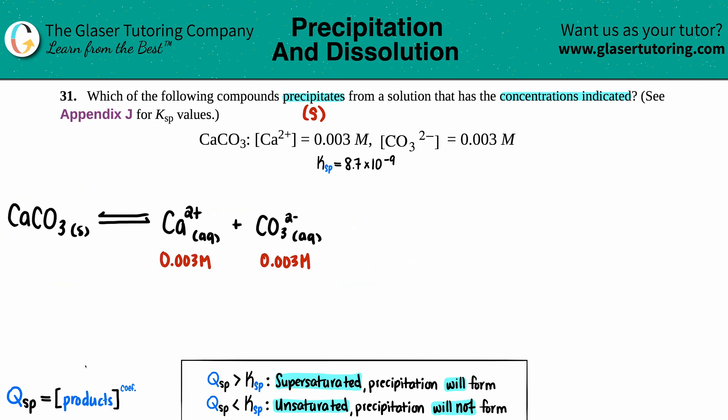It's the same as the Ksp equation, which we've been using throughout this whole chapter. Qsp equals concentration of the Ca²⁺ times the CO₃²⁻. It's a balanced equation - there's no coefficients, so I don't have to raise anything. They're all raised to the first. This is 0.003 and this is 0.003, so let's just plug in and solve.